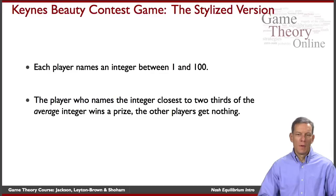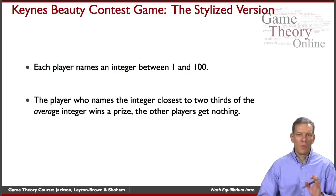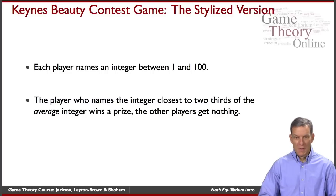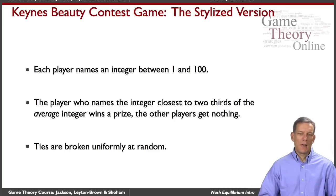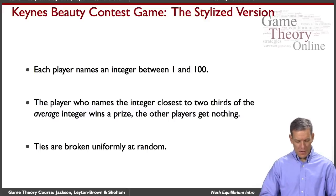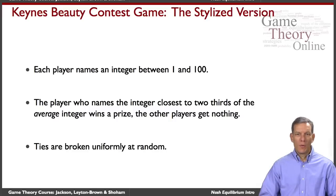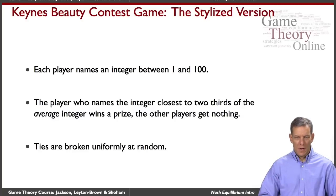To win this game, you have to guess the average and then two-thirds of it — you want to be right at two-thirds of whatever the average guess is, so a little bit below the average guess. Ties with three people are resolved with a three-sided die, etc. So how would you play this game? You have to think about what other players are going to do, and then forecast what you think the best integer is in response to that.